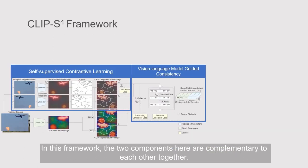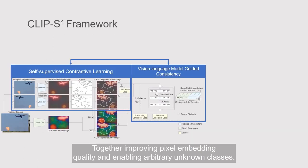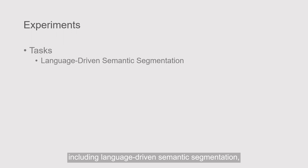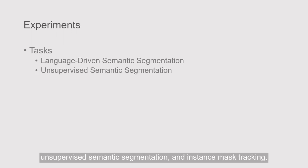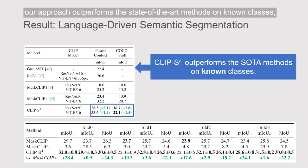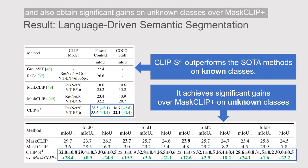In this framework, the two components are complementary to each other, together improving pixel embedding quality and enabling arbitrary unknown classes. We conduct extensive experiments over various semantic segmentation tasks, including language-driven semantic segmentation, unsupervised semantic segmentation, and instance mask tracking. For language-driven semantic segmentation, our approach outperforms the state-of-the-art methods on known classes and also obtains significant gains on unknown classes over MaskCLIP+.